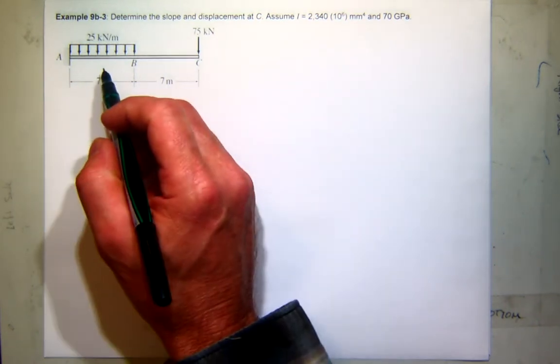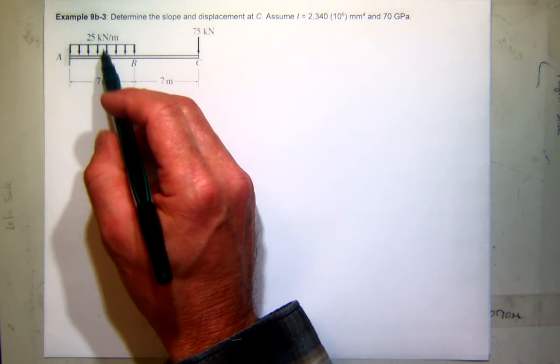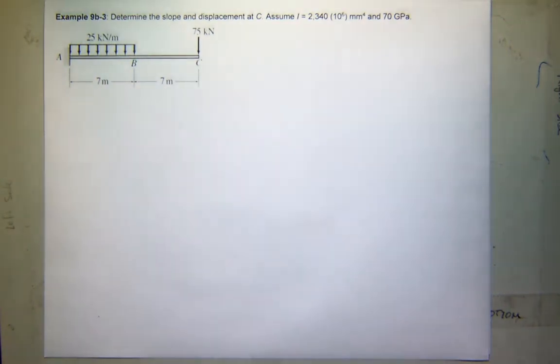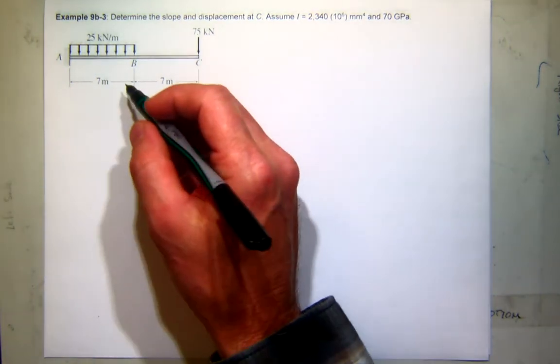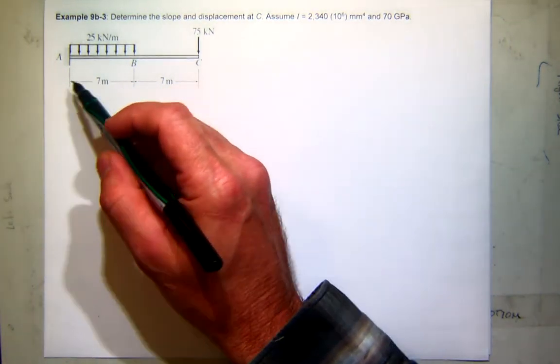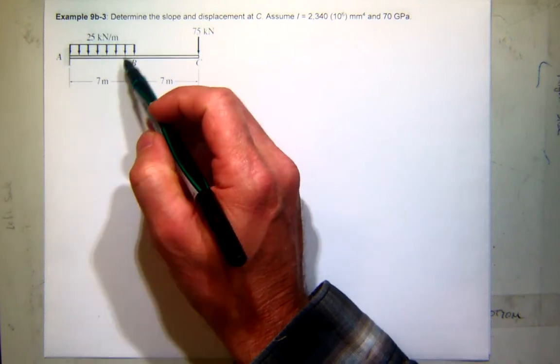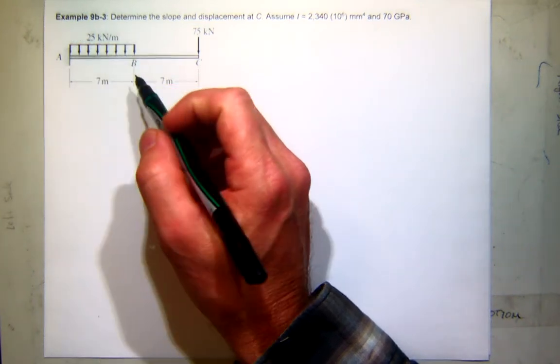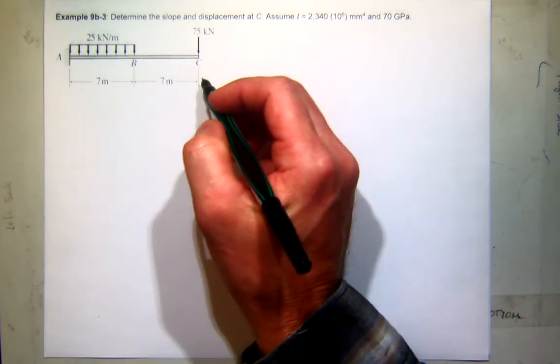So one thing to think about in the future, too, is I want the slope and displacement at C, so we'll end up with a virtual load and a virtual couple at C. In both those cases, we'll be able to write a single equation that's valid for the whole structure, so that won't be too bad. Now when we look at the real situation, I'm going to have to have how many equations? Two, right, one that's good from 0 to 7, where the load is continuous, and then a different one from 7 to 14.